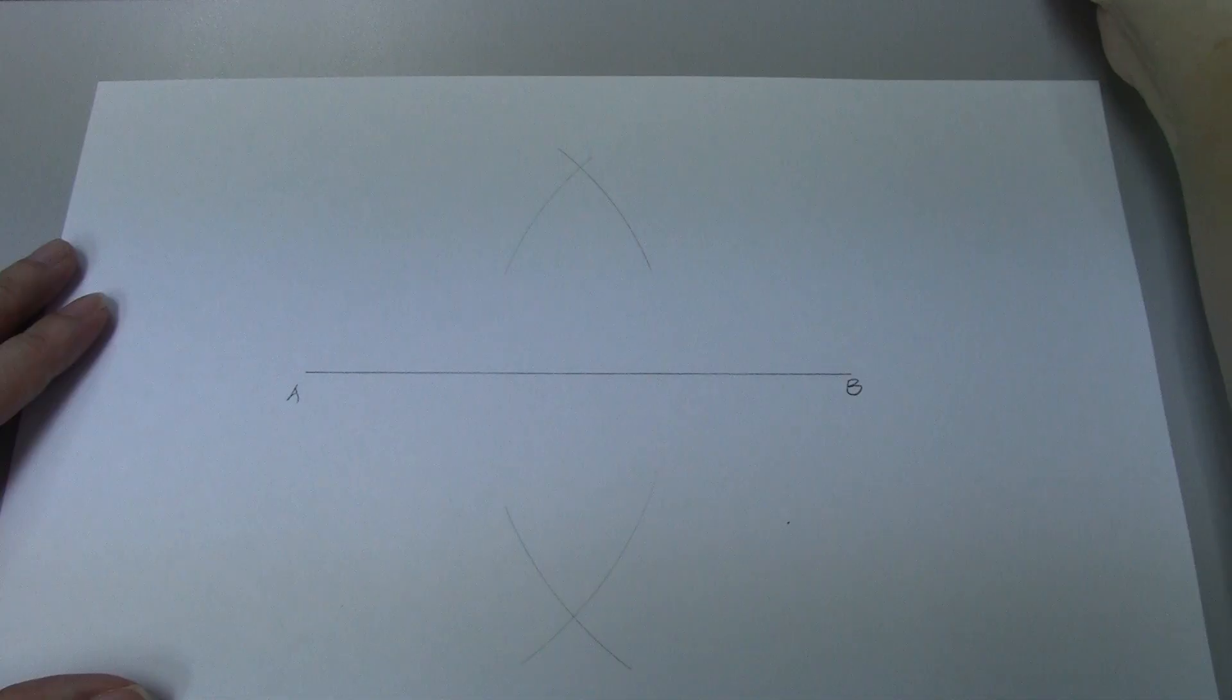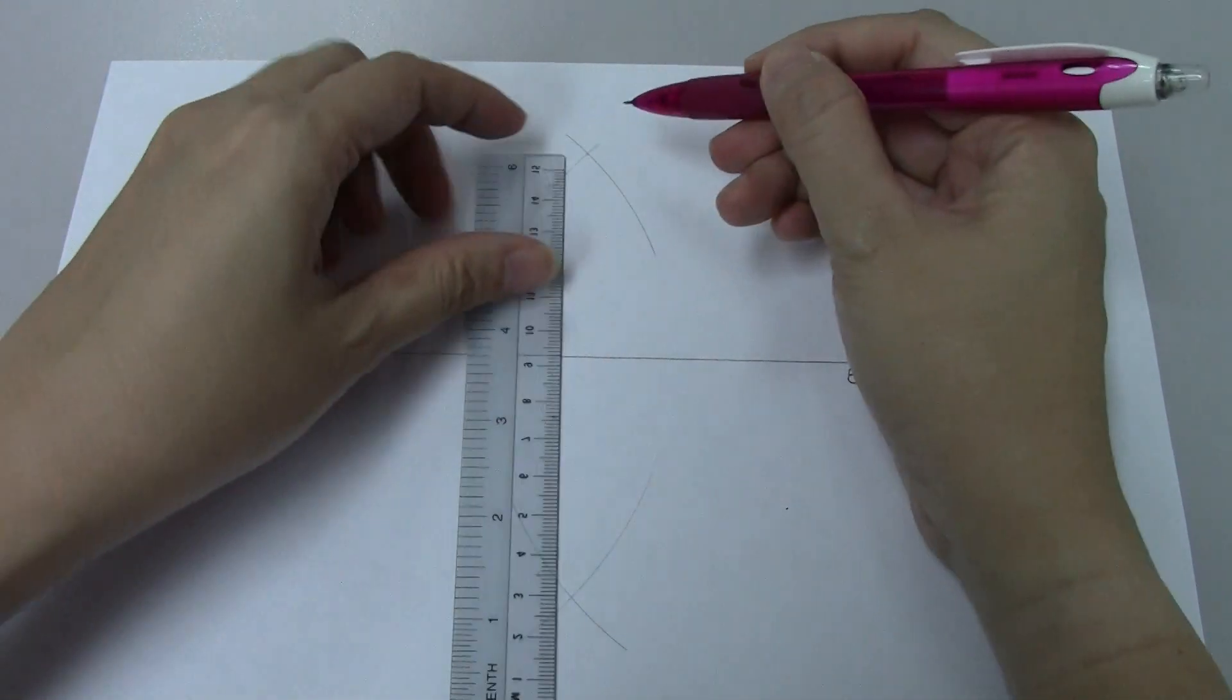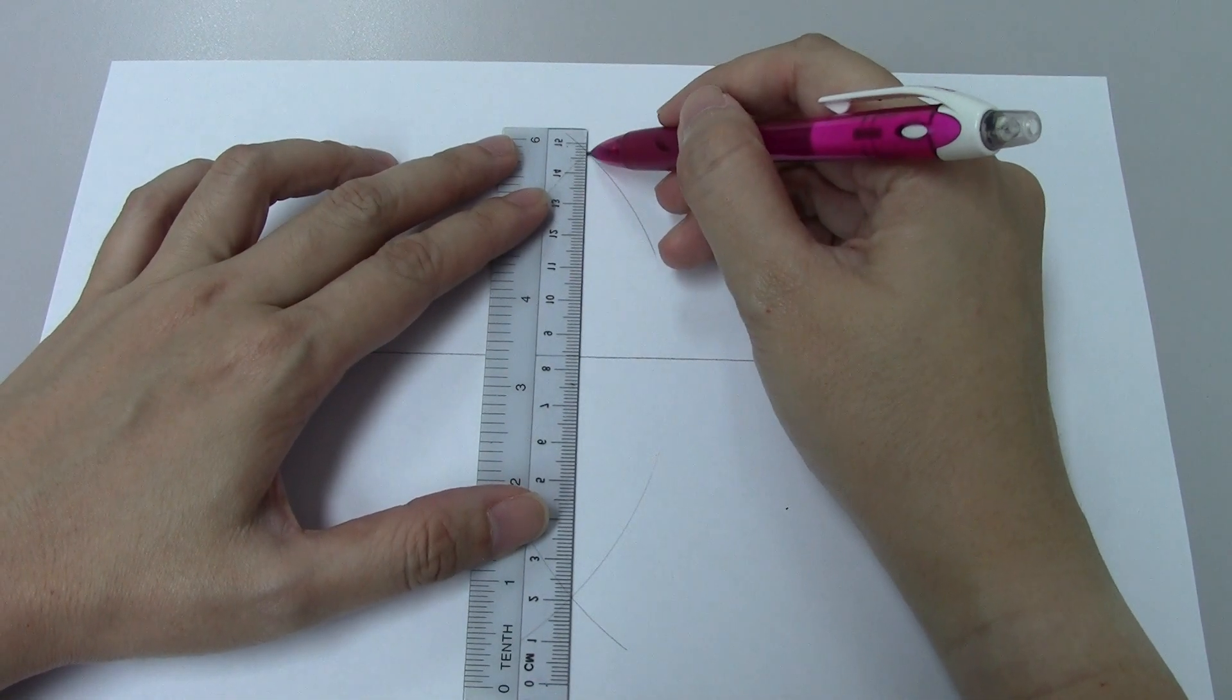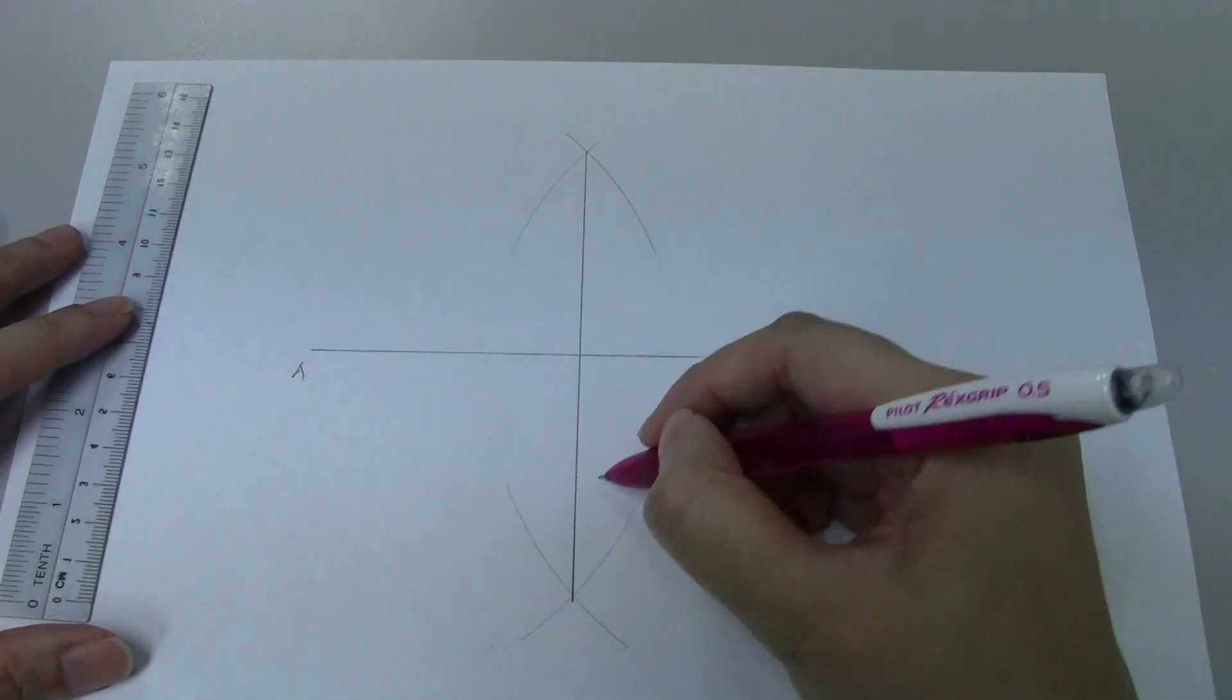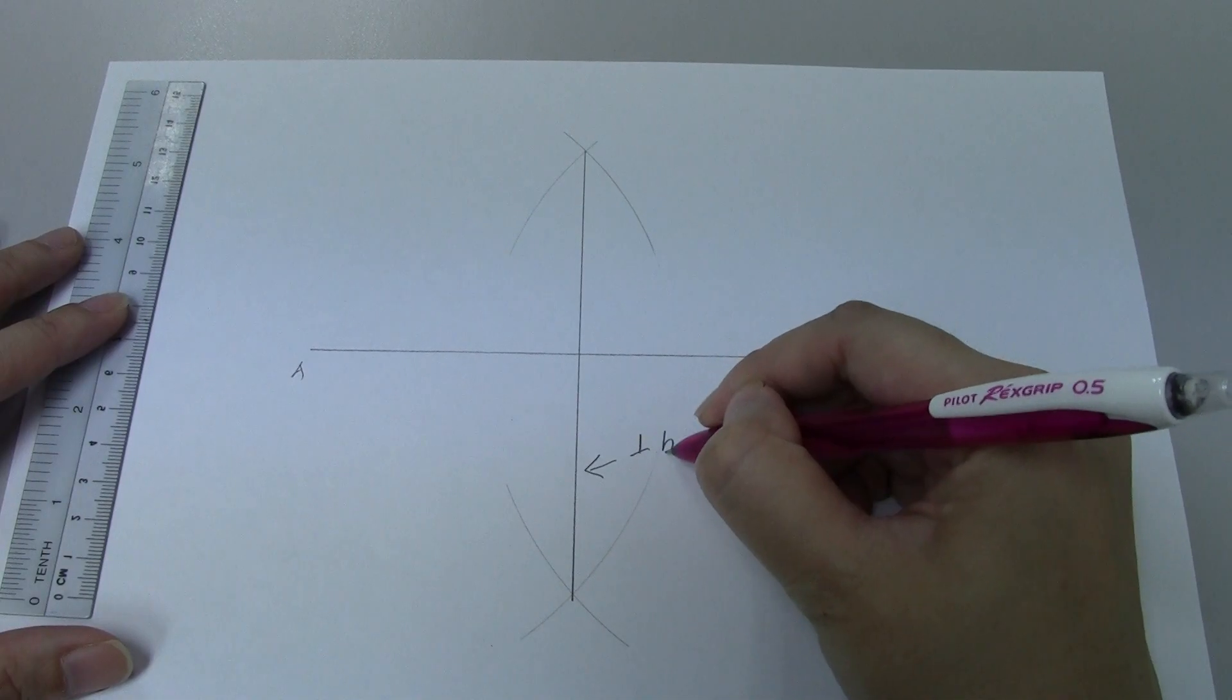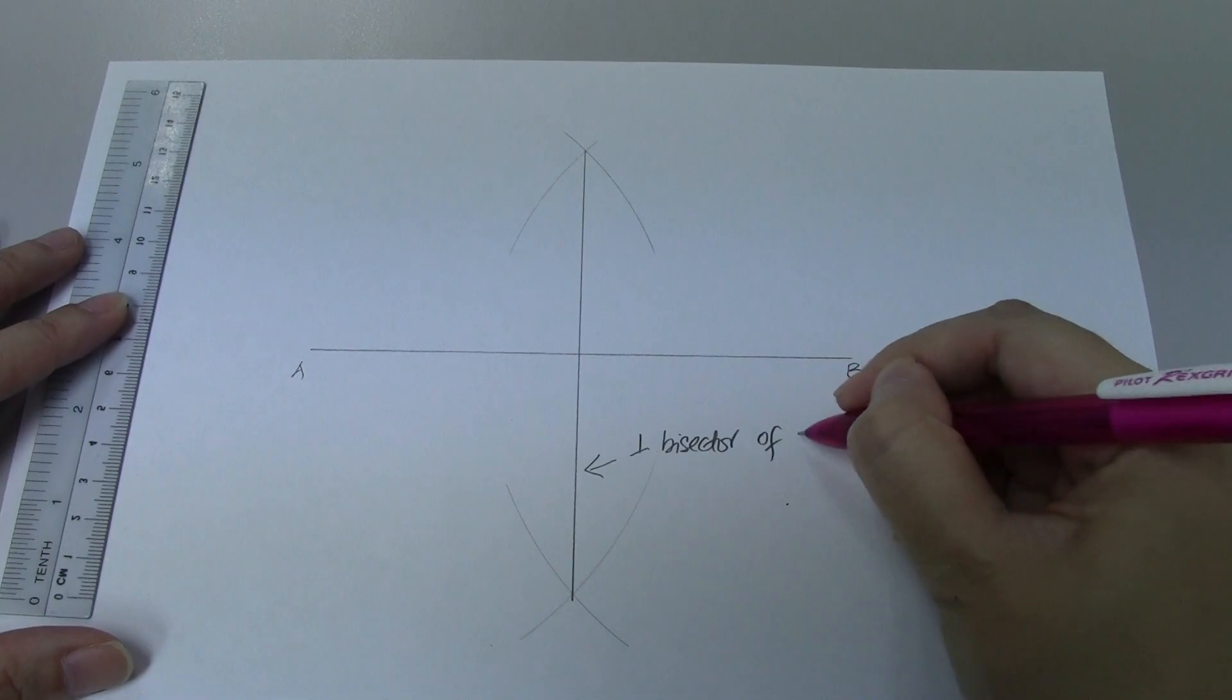Step four, we're going to join the two intersection points between the arcs. So the line that we have drawn here, this is what we call our perpendicular bisector of A, B.